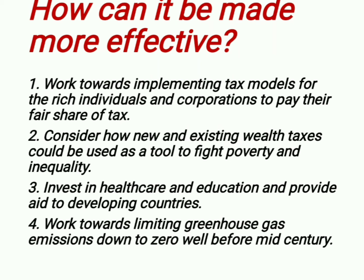How can G7 be made more effective? First, work towards implementing tax models for rich individuals and corporations to pay their fair share of tax. Second, consider how new and existing wealth taxes could be used as a tool to fight poverty and inequality. Third, invest in healthcare and education and provide aid to developing countries like India. Fourth, work towards limiting greenhouse gas emissions down to zero well before mid-century, as greenhouse effects are causing global warming to rise alarmingly.